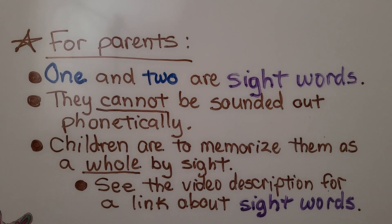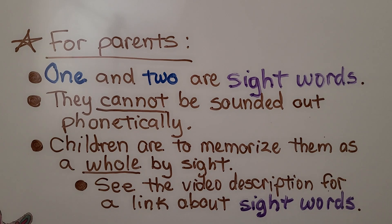This is a message for the parents. One and two are sight words. They cannot be sounded out phonetically. Children are to memorize them as a whole by sight. You can see the video description for a link about sight words.